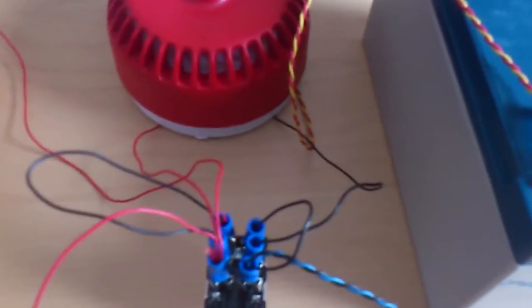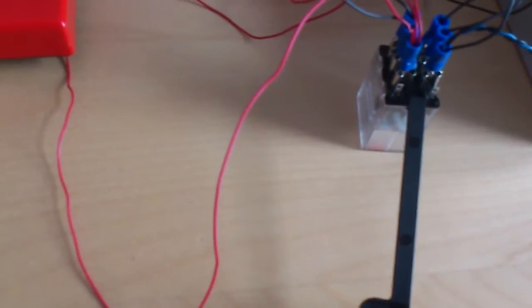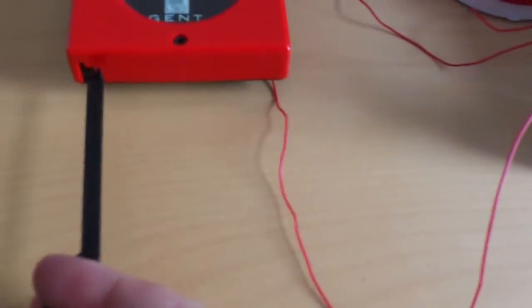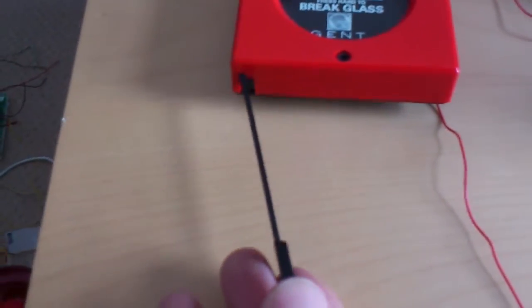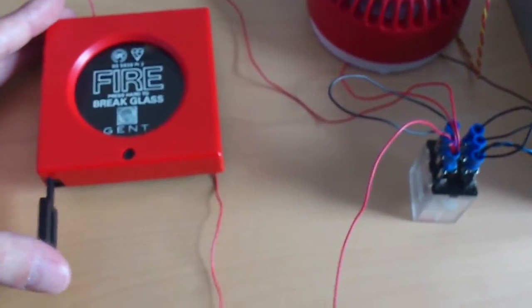So I'll explain exactly what you need to do after I've given a quick demonstration, which of course would be necessary. So what we're going to do, we're going to simulate breaking the call point by using the test key. So the test key itself is going to activate the call point, which will then activate the relay, and then I will show you what happens when we reset the call point. So first of all, we'll put the test key into the call point. So we're going to activate the system as such, so here goes.